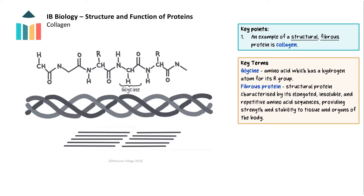Collagen is the most abundant fibrous protein in the human body and plays a critical role in providing tensile strength to connective tissues. It forms a triple helix structure composed of three polypeptide chains, known as alpha chains. Each polypeptide chain has repeated amino acid sequences, with every third amino acid being glycine. The small R group of glycine enables the helical chains to wind around each other, and they are held together by hydrogen bonds. These triple helices lie parallel but staggered to each other, with covalent bonds between them, which means that collagen provides resistance to stretching and gives tissues their structural integrity.